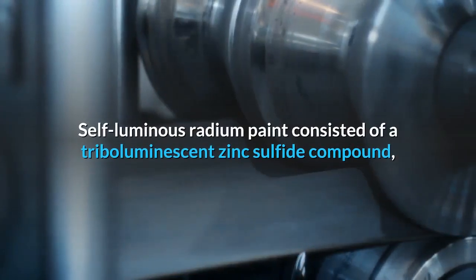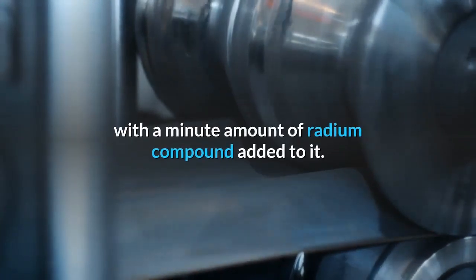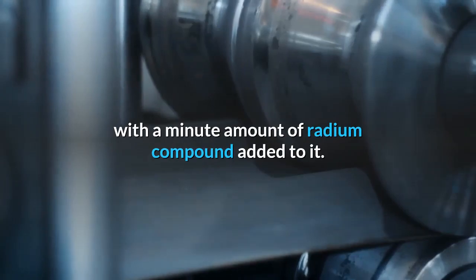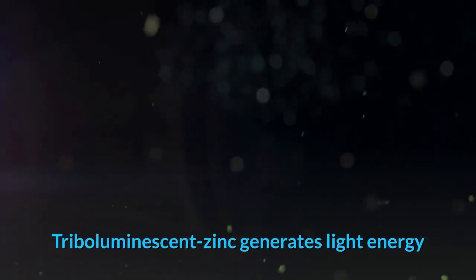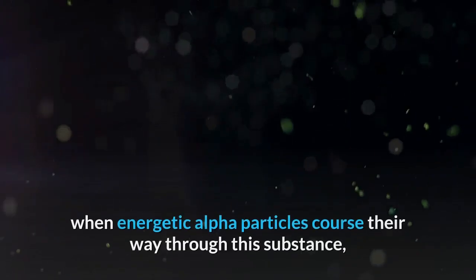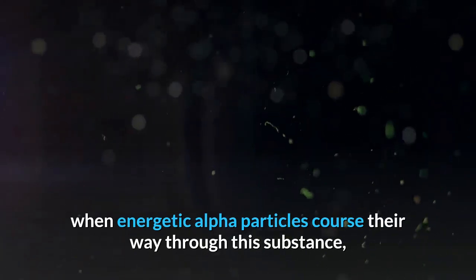Self-luminous radium paint consisted of a triboluminescent zinc sulfide compound with a minute amount of radium compound added to it. Triboluminescent zinc generates light energy when energetic alpha particles course their way through this substance, causing friction as they pass through it.